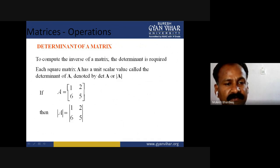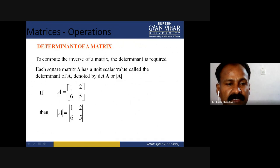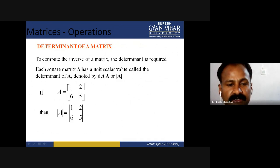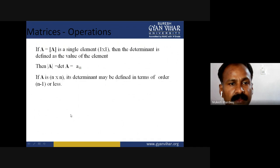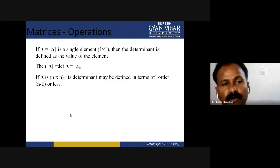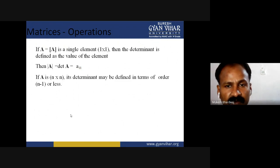The determinant of any matrix — for example, a matrix A is shown and it is 1, 2, 6, 5. For finding out the determinant, instead of bracket or braces, we just put the vertical lines alongside the arrays of our matrix. This is the representation of determinant. If A is a single element one by one, then the determinant is defined as the value of that element.